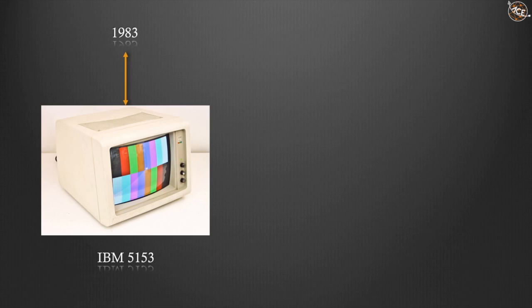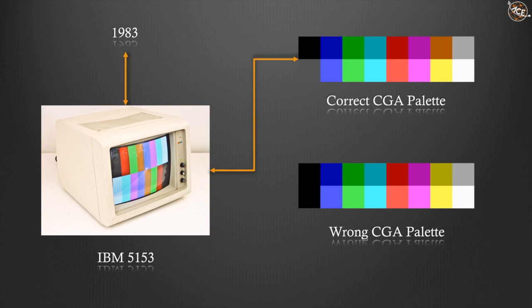Only the IBM 5153 monitor was able to display correctly the entire palette of CGA. Compatible monitors didn't display correctly two colors — the brown was displayed as dark yellow, and the dark grey as black.